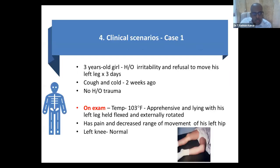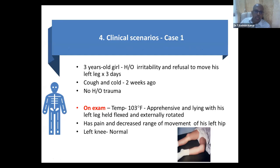So now we know the approach whenever a child comes with joint pain. First question: is it arthralgia or arthritis? Second question: is the pain coming from the joint or surrounding tissue? Third question: is it inflammatory or non-inflammatory? Then ask history about other systemic involvement — with or without fever, history of trauma, history of coagulopathy — all those things we need to assess.